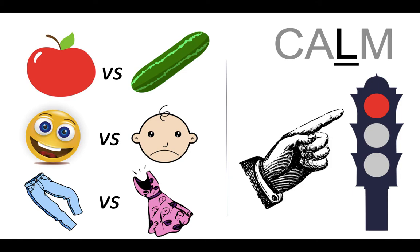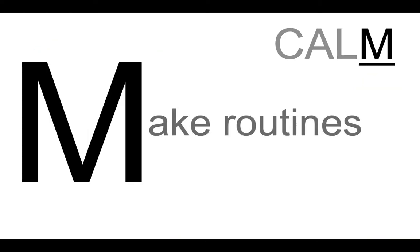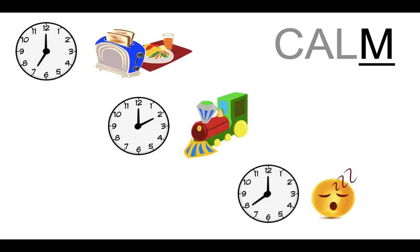Try to explain to your kid why it shouldn't do a certain thing. Now to the last letter of the word calm, the M. Make routines of naptimes and meals as much as possible. This addresses their basic needs and offers security in what happens at what time. Maybe have a chart with clocks and pictures so your child knows what to expect and remind them beforehand what's up next.